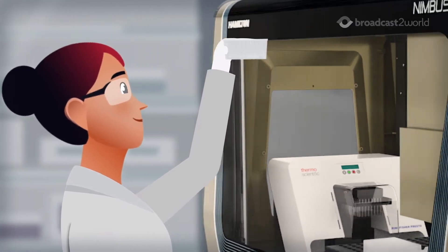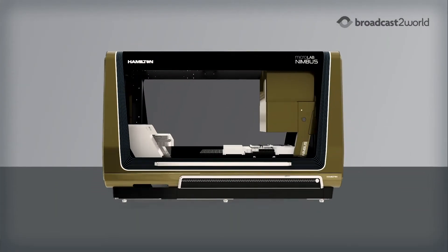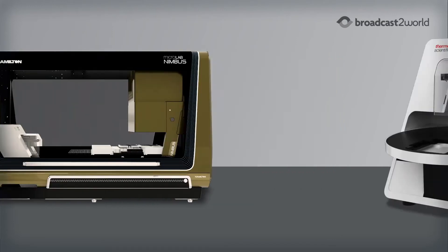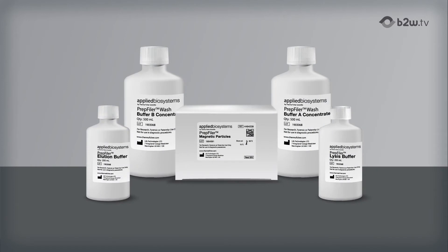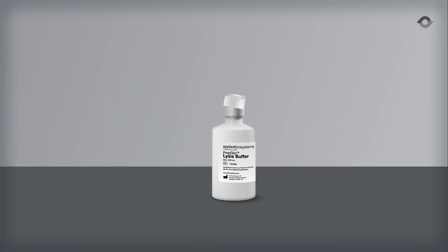The system is comprised of three key parts: Hamilton ID Nimbus Liquid Handler, Thermo Scientific Kingfisher Presto Purification System, and a pre-validated script optimized for Applied Biosystems Prep Filer Forensic DNA Extraction Chemistry.